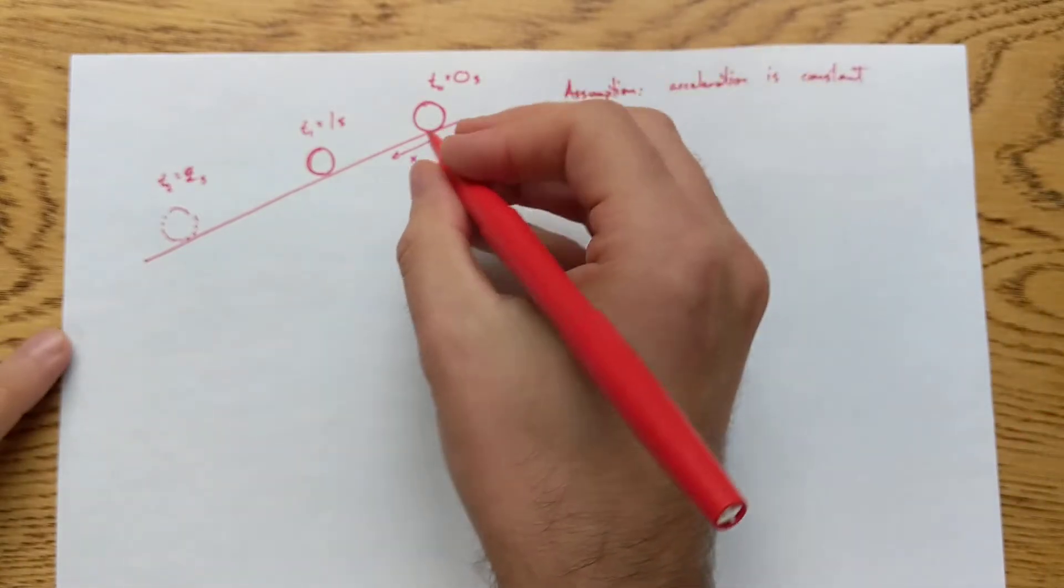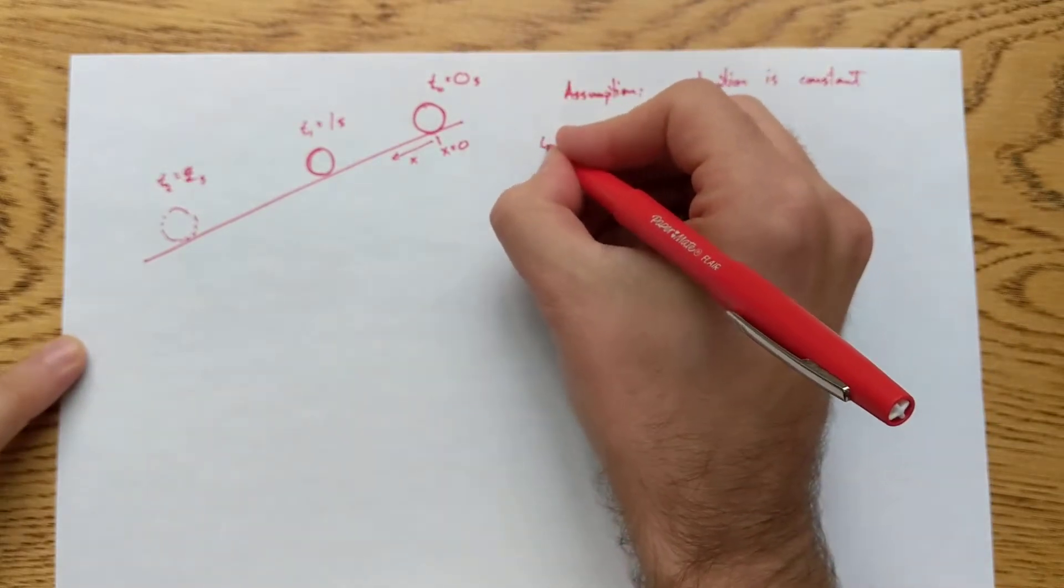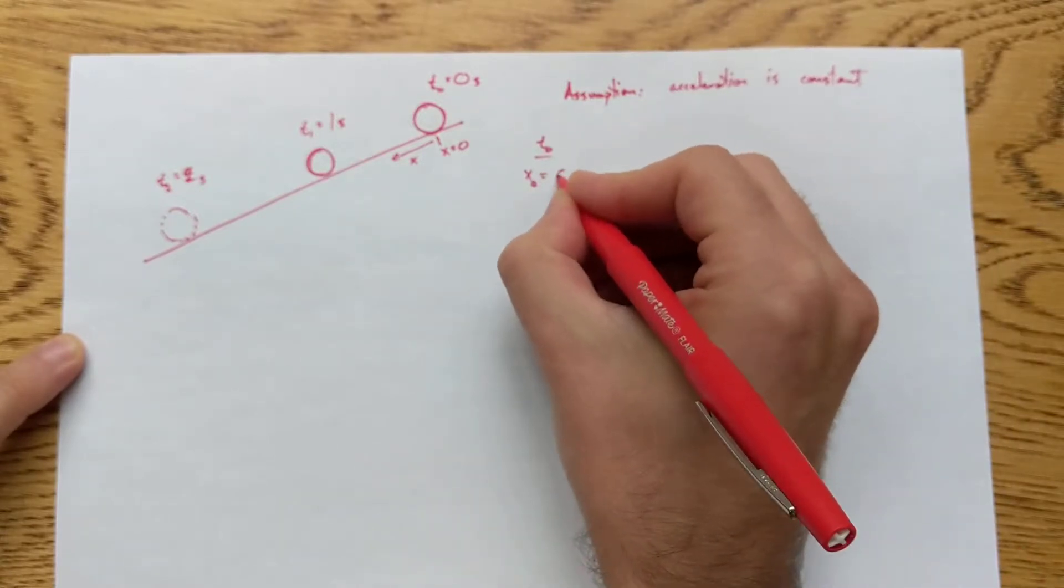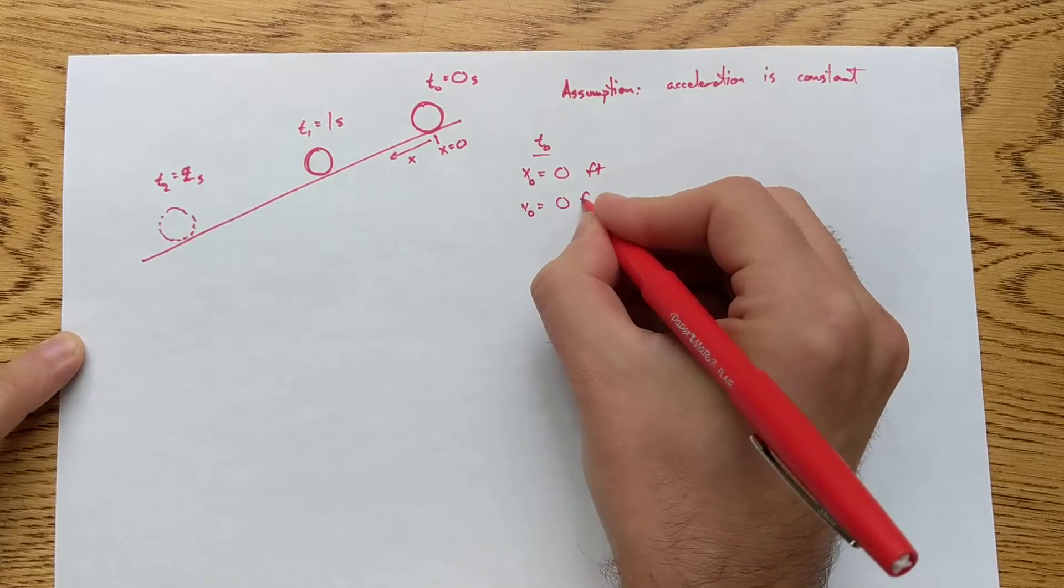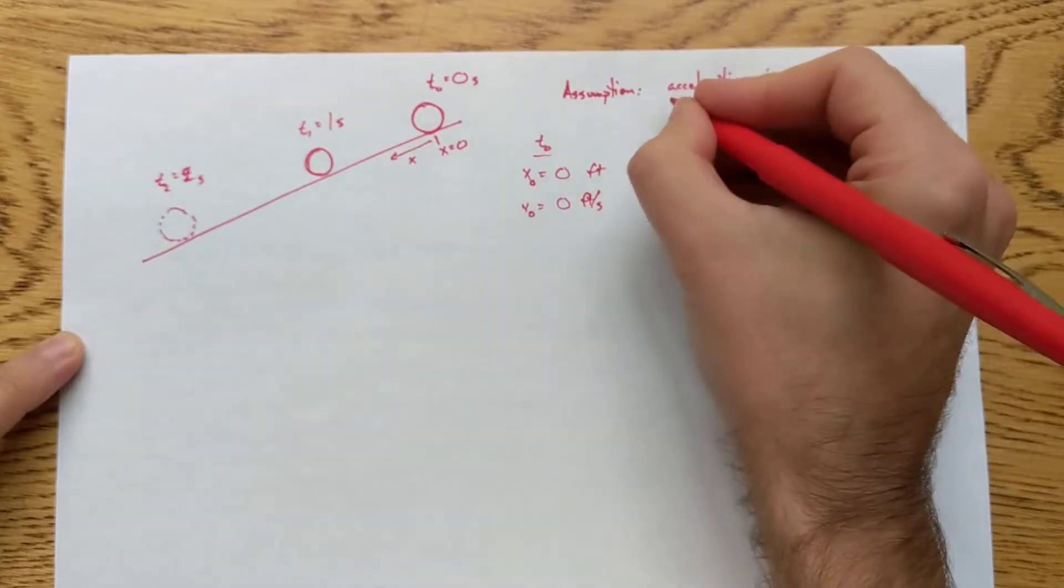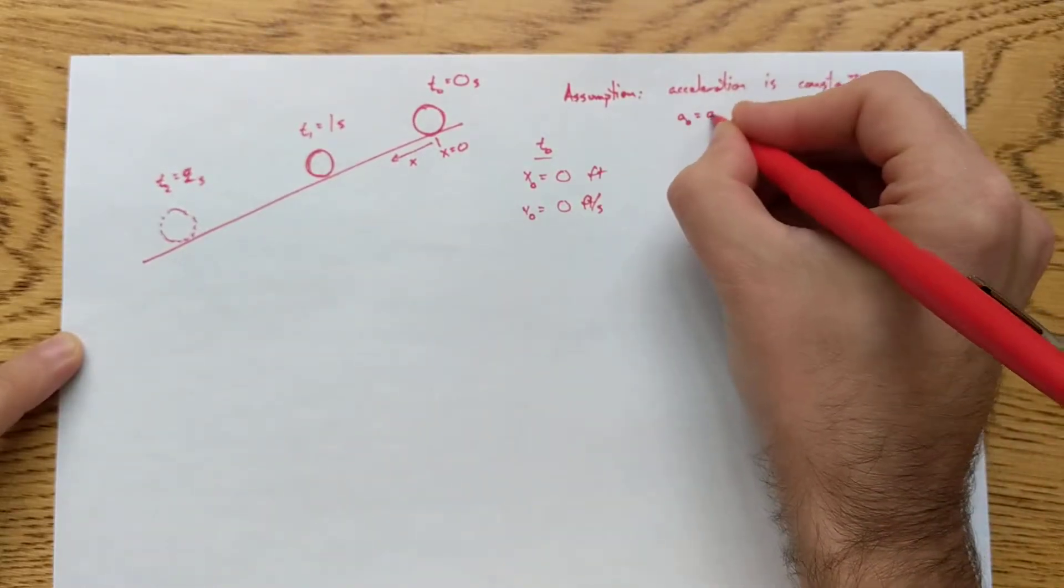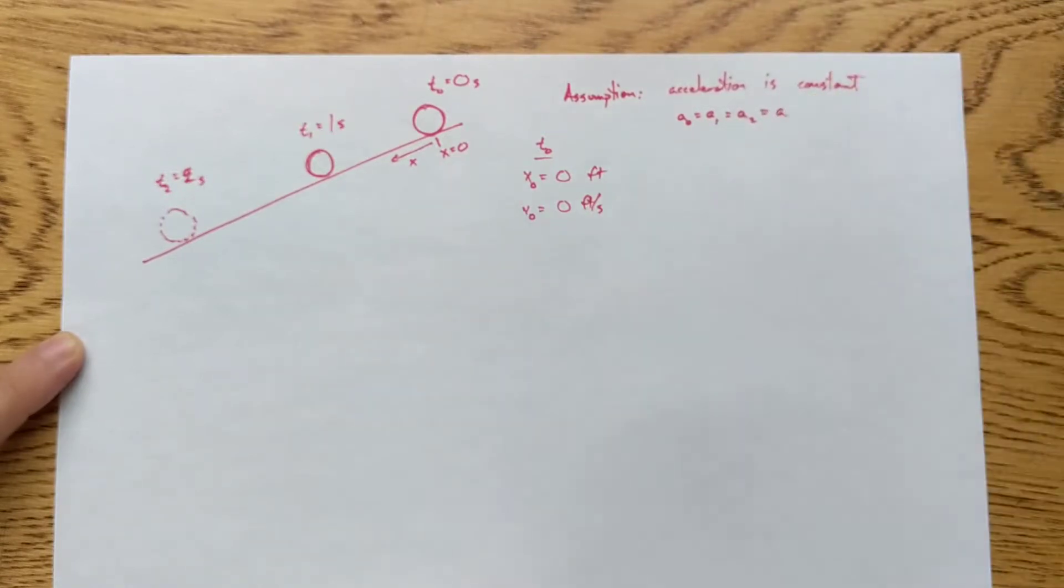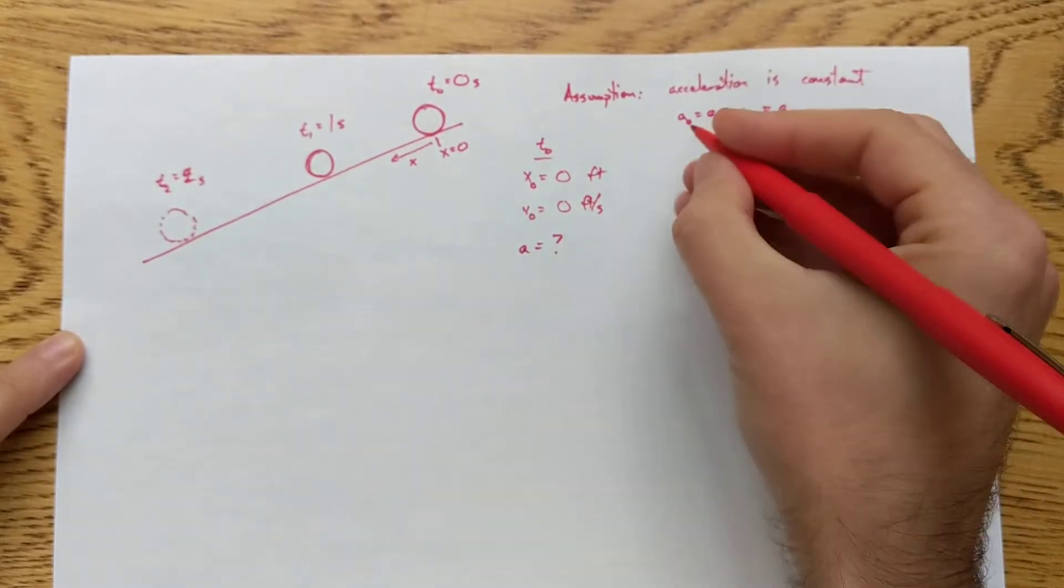Okay, now what I'm going to do is start listing values at these different times. So at t0, my position starts off at 0 feet. It starts off from rest, so my initial velocity is also 0. My acceleration, I could say a sub 0, but by saying acceleration is constant, I'm basically saying that the acceleration at all these different times is just the same. I'll call it a for now. I don't know what it is.